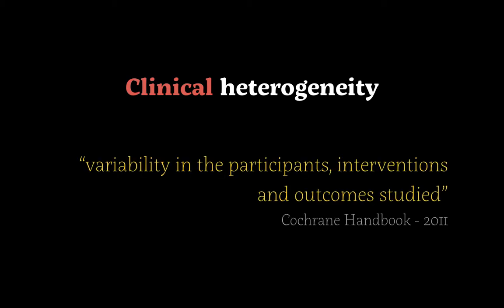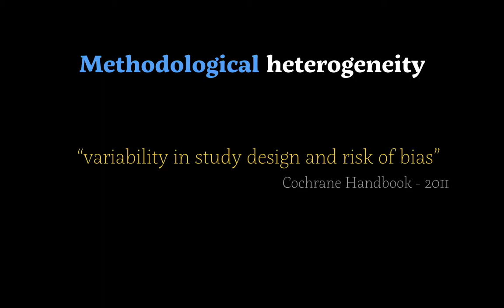The first type is clinical heterogeneity, which specifically looks at the variability in the participants, interventions, and outcomes studied — as defined by the Cochrane Handbook. When looking at a study, you want to make sure it is focused on a specific population and common outcomes, and not comparing apples and oranges.